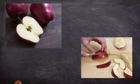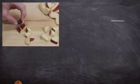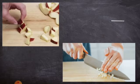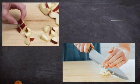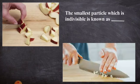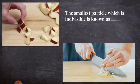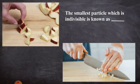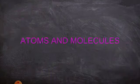Take one apple, cut it down into two halves. Take one part of it and cut it down into smaller and smaller pieces. At one point of time, you cannot further cut it down. So the finest particle or the smallest particle which is indivisible is said to be an atom. In today's class, we are going to learn a new chapter: atoms and molecules.